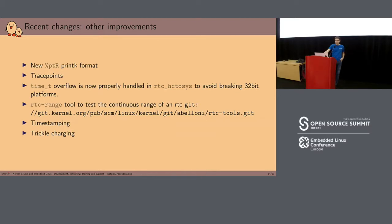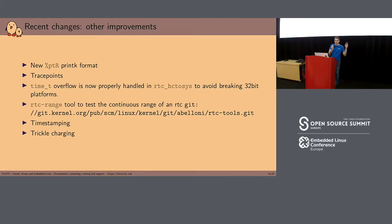I also wrote a new tool called rtc-range, which tests the continuous range of an RTC. It's not testing all dates, obviously, but there is a set of cutoff dates that are usually problematic for RTCs, and it will test those and say 'that RTC looks like it will fail at that time.'